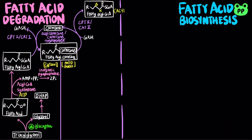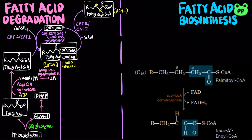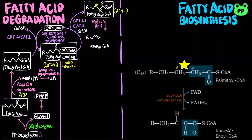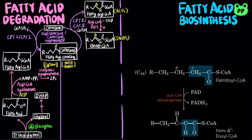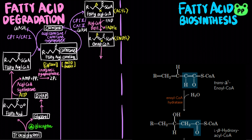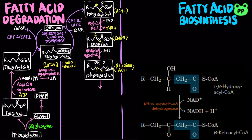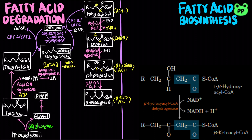The beta-oxidation of saturated fatty acids involves four repeating steps that oxidize and release two carbons from the carboxyl end as acetyl-CoA. First, acyl-CoA dehydrogenase produces a double bond between the alpha and beta-carbons of fatty acyl-CoA, producing trans-enoyl-CoA, coupled to the reduction of FAD to FADH2. Next, enoyl-CoA hydratase catalyzes a hydration reaction on enoyl-CoA, producing beta-hydroxyacyl-CoA, which is subsequently oxidized to beta-ketoacyl-CoA by beta-hydroxyacyl-CoA dehydrogenase, coupled to the reduction of NAD+ to NADH.